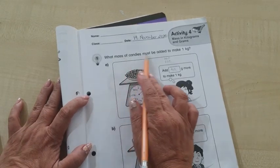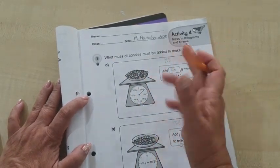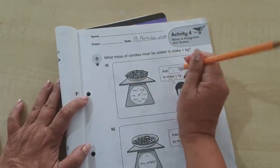So let's look at what mass of candies must be added to make 1 kg. We have to make 1 kg. Let's look at the picture and the scale.